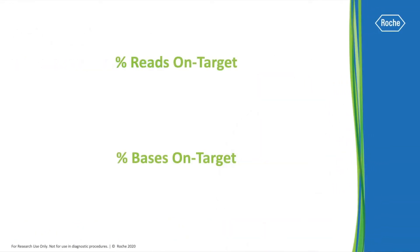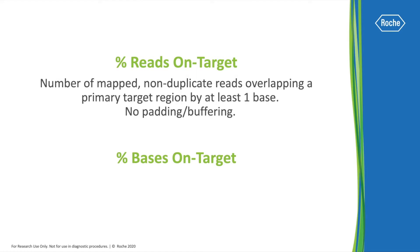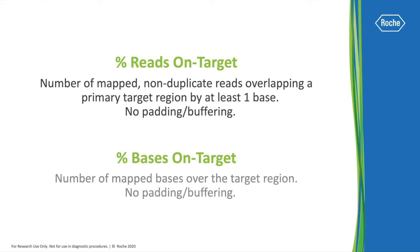The percentage of reads on target is the number of mapped non-duplicate reads overlapping a primary target region by at least one base, without any padding or buffering. The percentage of bases on target is the number of mapped bases over the target region, again without any padding or buffering.